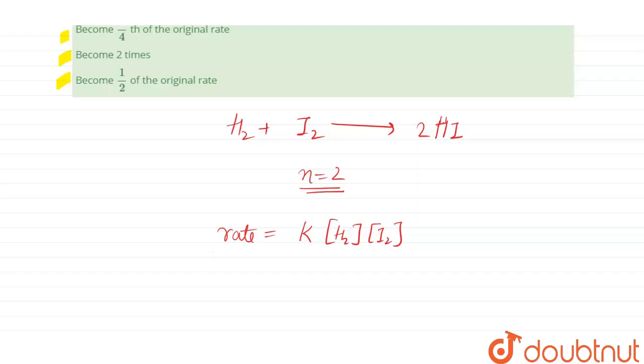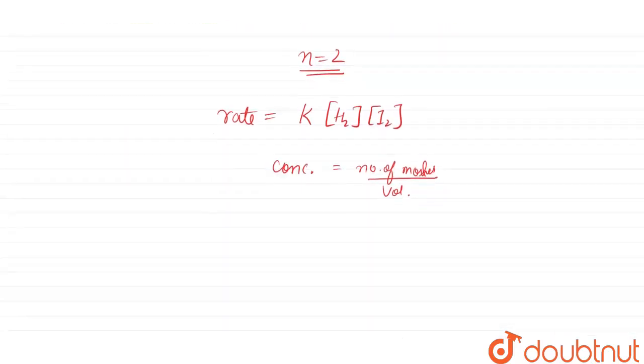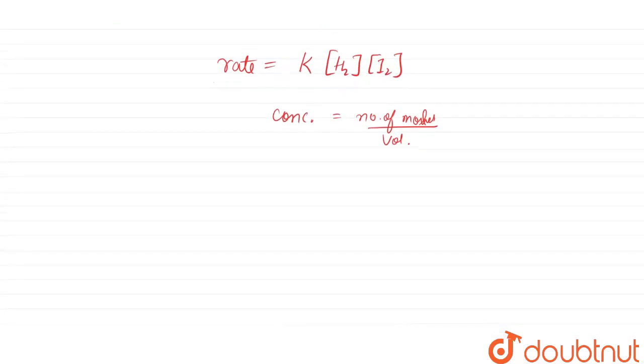Now, since we know that concentration equals number of moles by volume, we know that volume for this reaction will become—earlier the volume was V and it was increased to 2V.